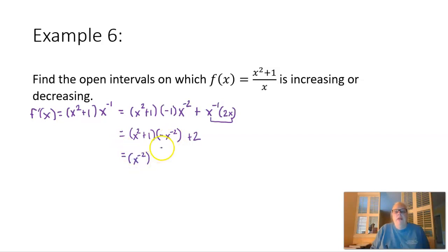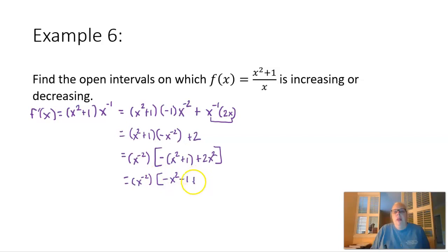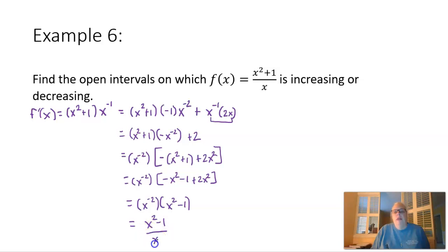Now I'm going to factor out x to the negative 2. This leaves me with negative times the quantity x squared plus 1 plus 2x squared. Cleaning up the inside: negative x squared minus 1 plus 2x squared gives x squared minus 1. So we get x to the negative 2 times x squared minus 1, which written as a fraction is x squared minus 1 divided by x squared.